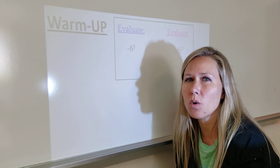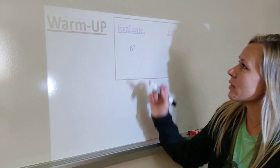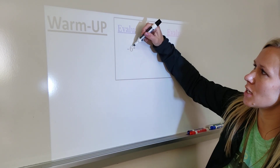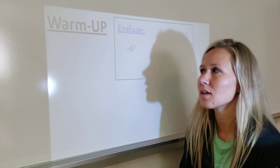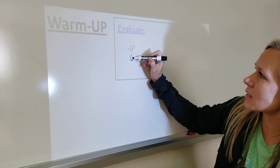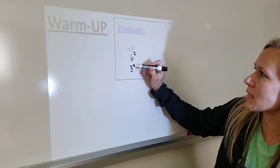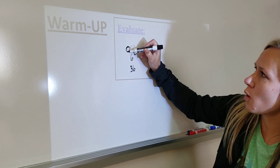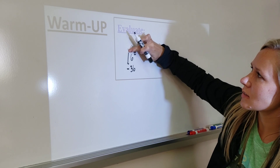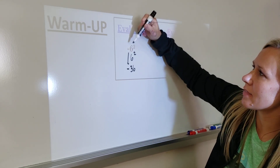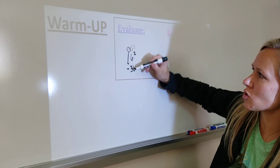The thing about the exponent is it only applies to whatever it's touching. So in this case, the exponent is touching the 6. That means it only applies to the 6. So I'm really only taking 6 to the second power, which gives you 36, and then the negative sign would just be brought down, because when you read this it's saying the opposite of 6 squared.